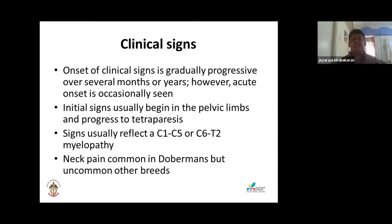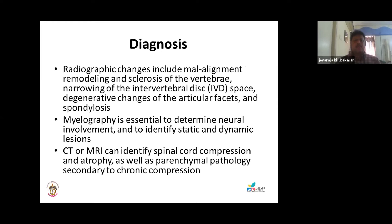Clinical signs are gradually progressive over several months or years, though acute onset is occasionally seen. Signs typically begin in the pelvic limbs and progress to tetraparesis, reflecting C1-C5 or C6-T2 compression. Neck pain is common in Dobermans but less so in other breeds. Radiography shows malalignment, remodeling, sclerosis, vertebral narrowing, and degenerative articular facet changes. Myelography can show the degree and whether compression is static or dynamic; CT or MRI can identify spinal compression. Treatment for mild cases is conservative: steroids, carprofen, exercise restriction; or surgical techniques such as ventral slot, distraction-fusion, or dorsal laminectomy.